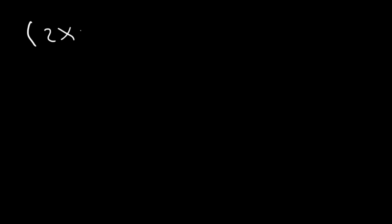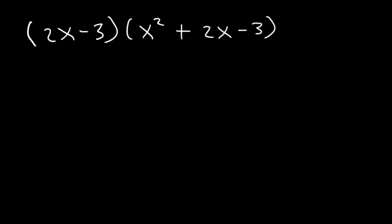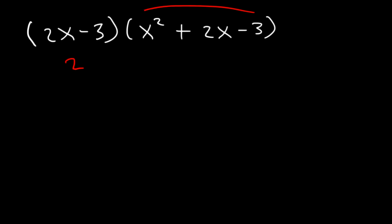Let's try this example. Let's multiply 2x minus 3 times x squared plus 2x minus 3. Now, in the last example, we saw that multiplying a binomial by a binomial will give us four terms before we combine like terms — and that makes sense, because a binomial has two terms, and 2 times 2 is 4. In this particular example, we're multiplying a binomial, which has two terms, with a trinomial, which has three terms. 2 times 3 is 6. So initially, before we combine like terms, we should have a polynomial with six terms.